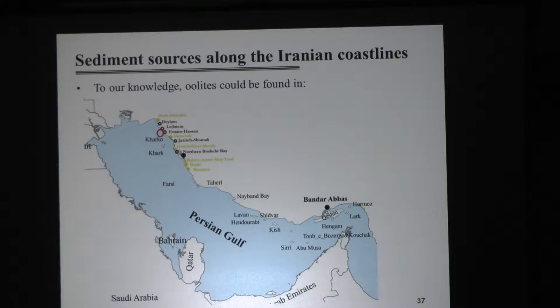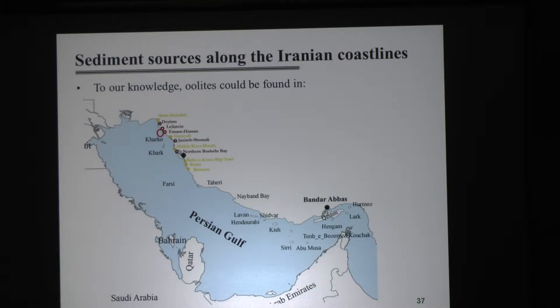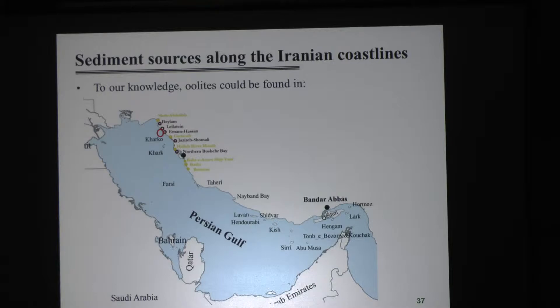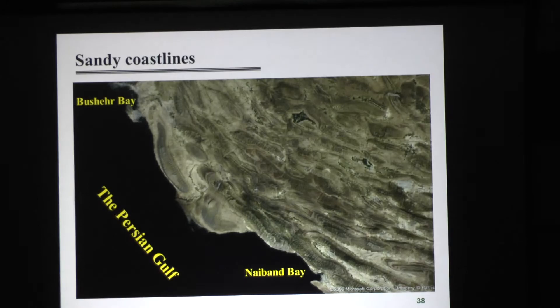These oolites are good habitat for foraminifera. We identified a pollution source based on the deformed shape of foraminifera in the area. There are buried oil pipelines nearby, and the people in charge knew there was a leakage from the pipeline but didn't know where. We studied foraminifera in the area, and just next to the zone with many deformed foraminifera particles, we could find the exact location of the oil leakage in the vicinity of the coastline.